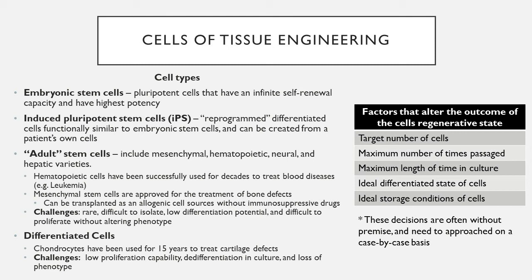Embryonic stem cells are often thought of as the gold standard because these are pluripotent stem cells with an infinite capability of self-renewal and the capacity to differentiate — a term called potency — into any of the approximately 213 types of cells found in humans. Adults also have their own types of stem cells, such as hematopoietic stem cells, which give rise to all types of leukocytes, mesenchymal stem cells, neural blood cells, and a couple of hepatic varieties. Hematopoietic stem cells have been used for decades in cell therapy for treatment of various blood-borne diseases.